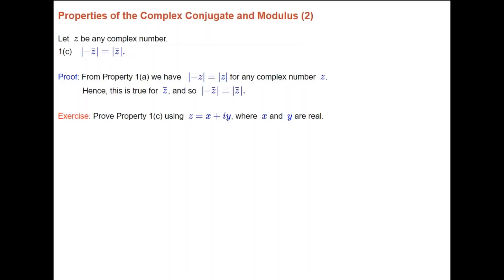You can also prove property 1c as an exercise using z equals x plus iy in Cartesian form. Combining properties 1a, 1b, and 1c, we have the modulus of z equals the modulus of minus z equals the modulus of the conjugate of z equals the modulus of minus the conjugate of z.